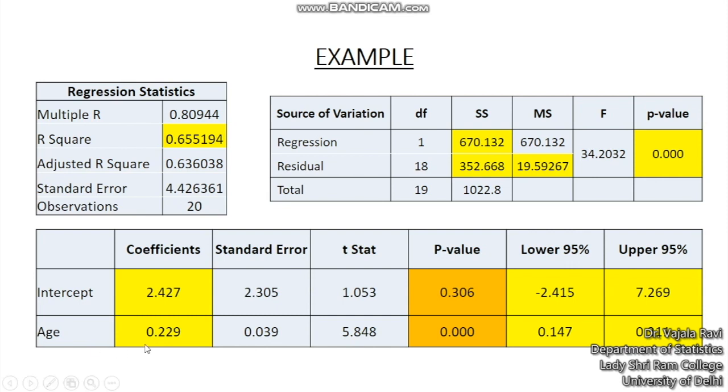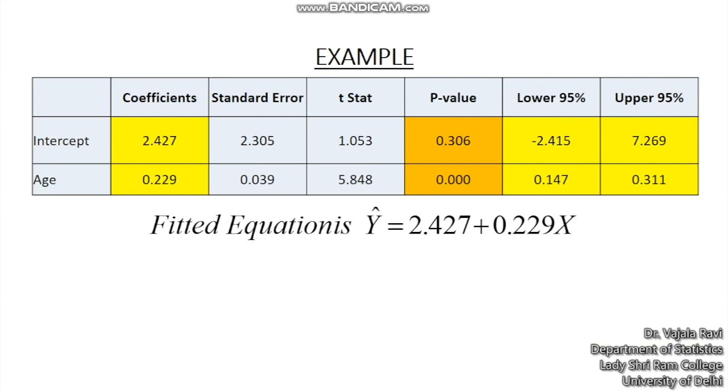So there appears to be a positive correlation as we saw in the initial few slides and here it says that the impact of age on your CT score is 0.229. So as age increases by one unit the CT severity score increases by 0.229 units.